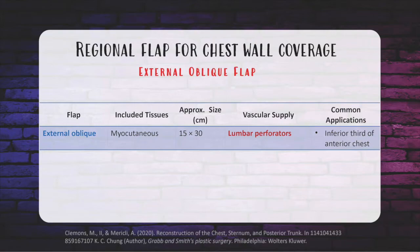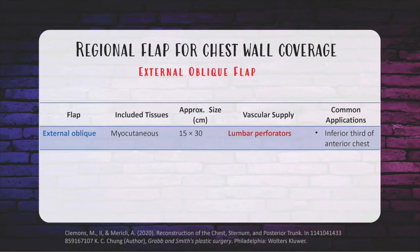The external oblique muscle is Mathes and Nahai type 5, with a dominant pedicle from the deep circumflex iliac artery and secondary pedicles from the 5th to 12th posterior intercostal arteries. An important distinction: in a type 5 flap, the flap can survive via secondary pedicles if the dominant pedicle is compromised — unlike a type 2, which depends entirely on the dominant pedicle. The external oblique is much less commonly used in chest wall reconstruction due to high donor site morbidity, including necrosis, damage to intercostal nerves, and a denervated abdominal wall.